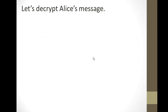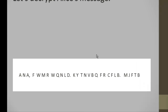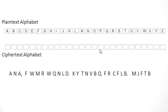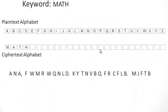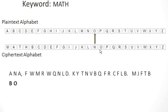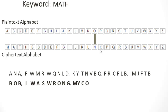Now let's go ahead and decrypt Alice's message. Place the message at the bottom of the screen. Take out the plain text and cipher text alphabet — the keyword to Alice's cipher was 'math,' so place 'math' in the first four spots of the cipher text alphabet, then fill in the remaining letters. Starting with A in her cipher: A decrypts back to B, N back to O, A back to B, F back to I, W to W, M to A — and finishing it off we get: 'Bob, I was wrong. My cover is fine. Alice.'